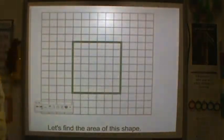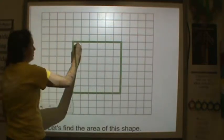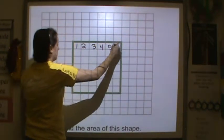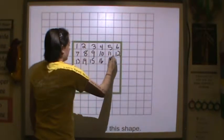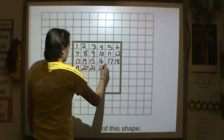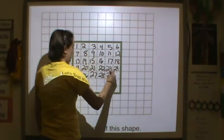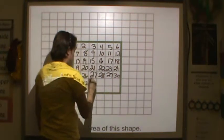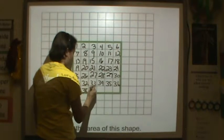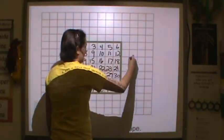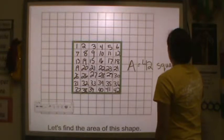Now let's look at this shape. So how many squares are in the inside of this green box? Let's count 1, 2, 3, 4, 5, 6, 7, 8, 9, 10, 11, 12, 13, 14, 15, 16, 17, 18, 19, 20, 21, 22, 23, 24, 25, 26, 27, 28, 29, 30, 31, 32, 33, 34, 35, 36, 37, 38, 39, 40, 41, 42. So the area of that shape is 42, I was counting square, so square units.